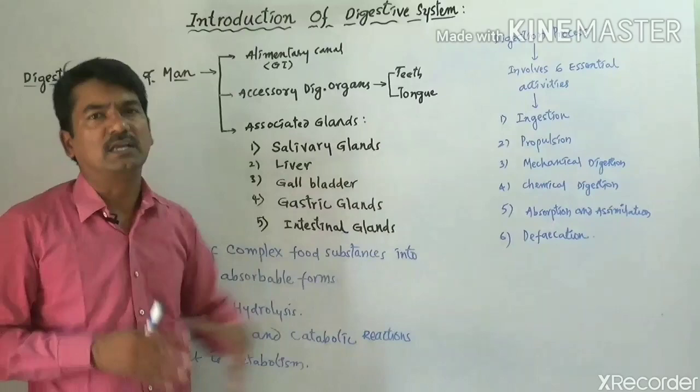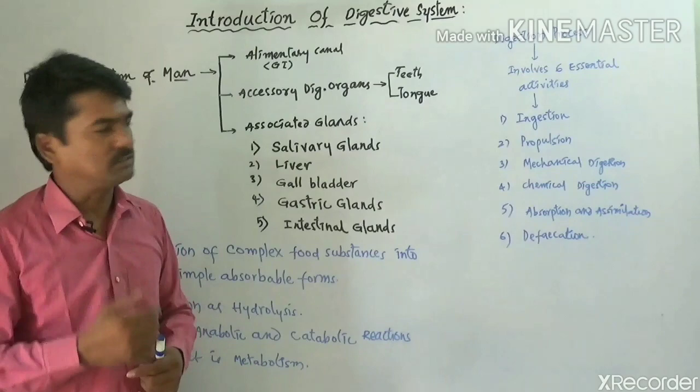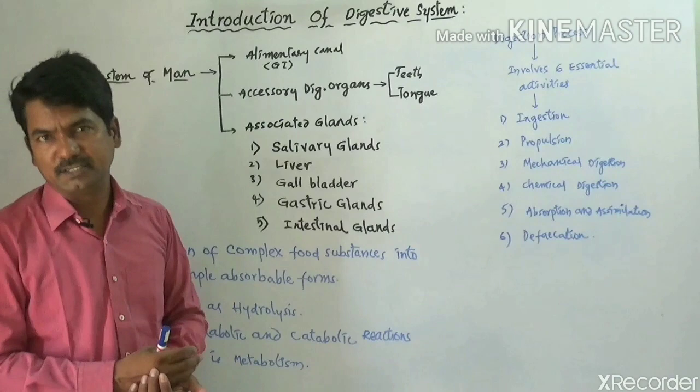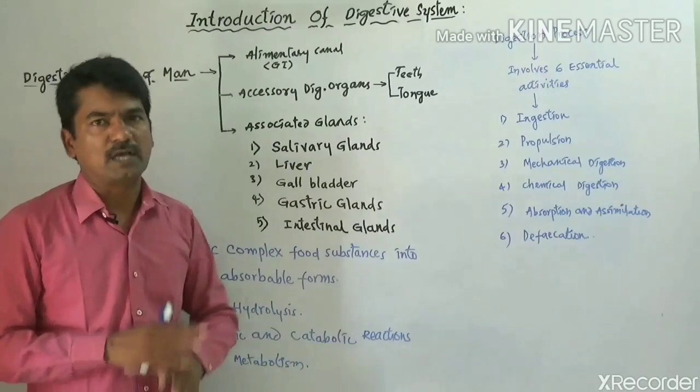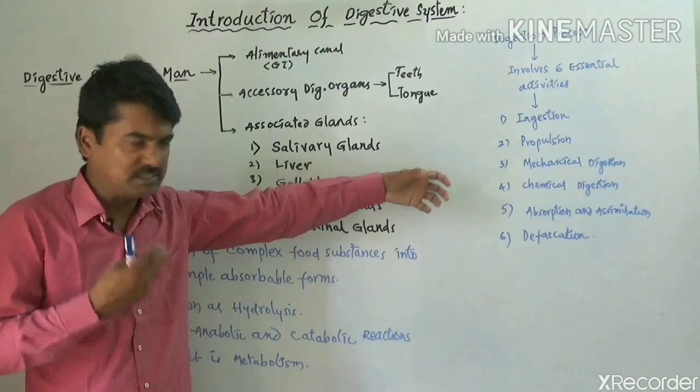Chemical digestion involves the releasing of chemical-related enzymes. By the releasing of enzymes, food will be digested — either partial digestion or completely digested. The total process is involved by this releasing of enzymes, and that is known as chemical digestion.